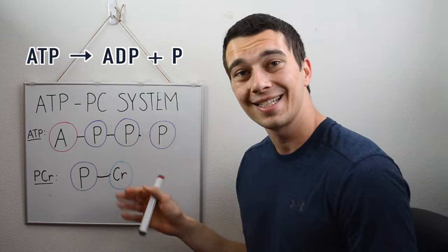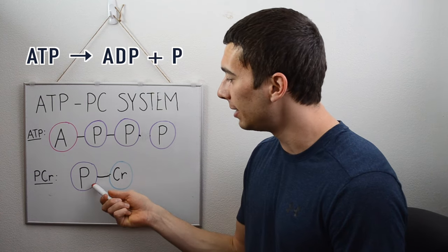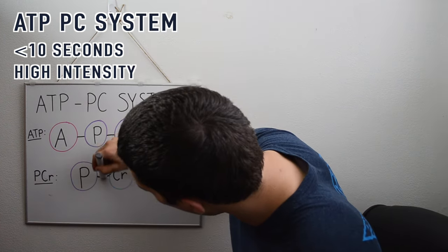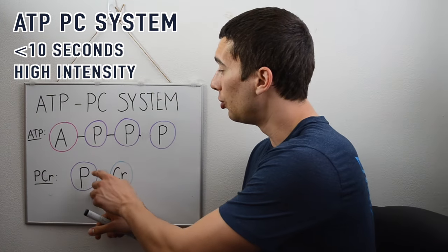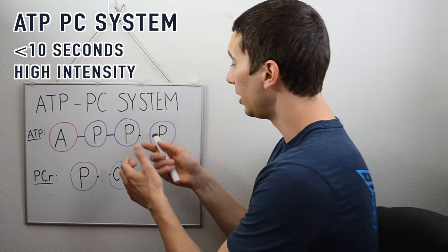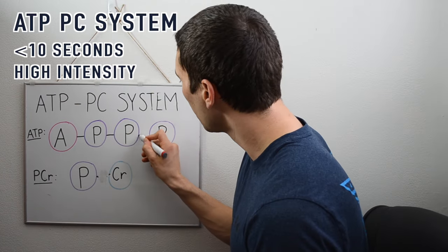Within that next three, four, and up to ten seconds, that phosphocreatine molecule will break its bond, which will allow this inorganic phosphate to reform with this ADP, so that way we can reestablish an ATP to be used for energy.